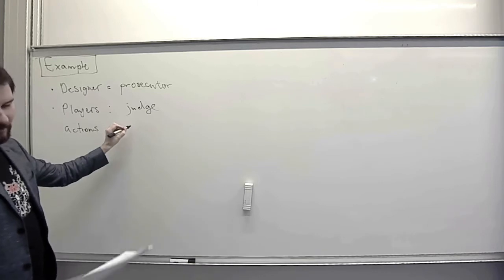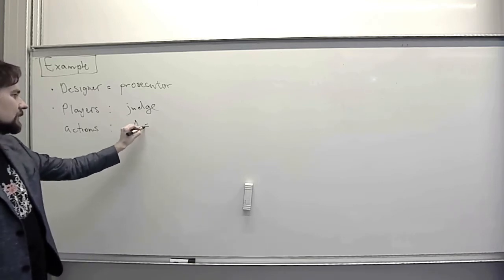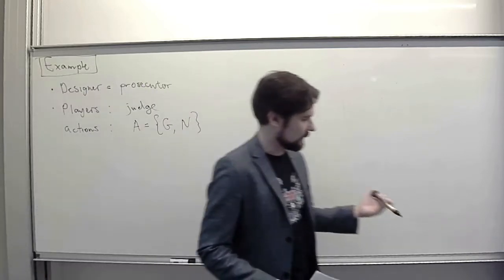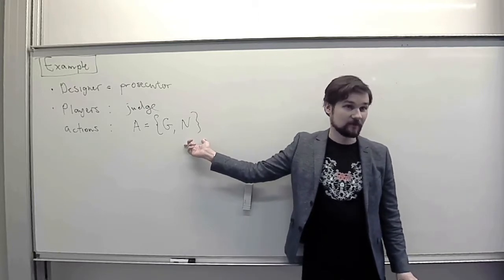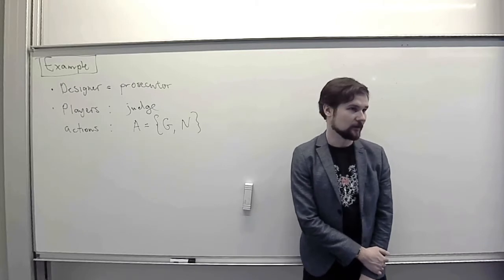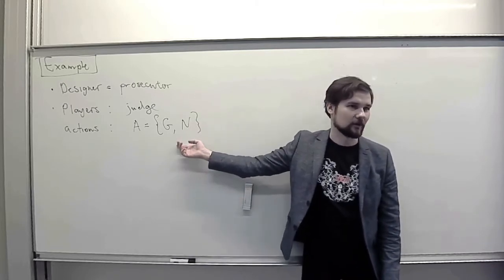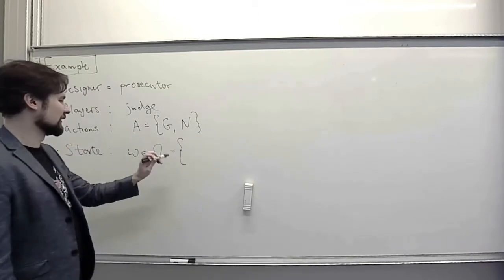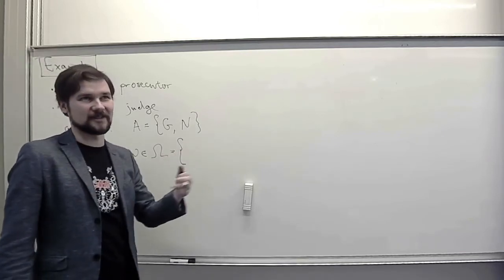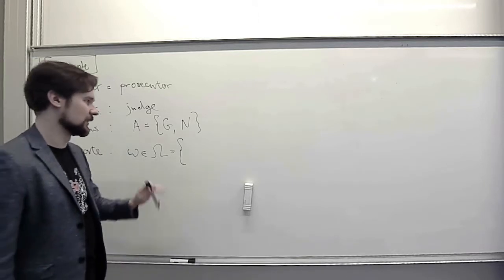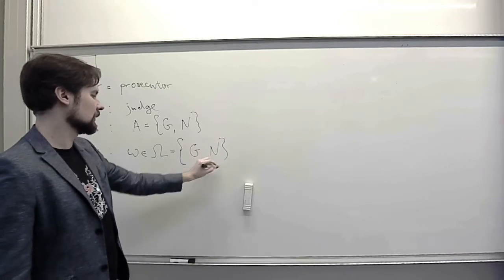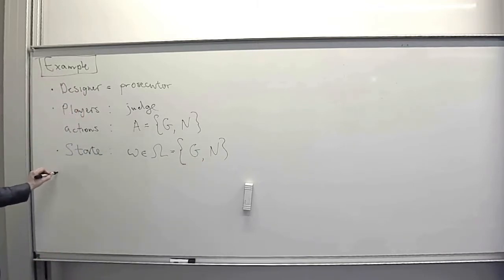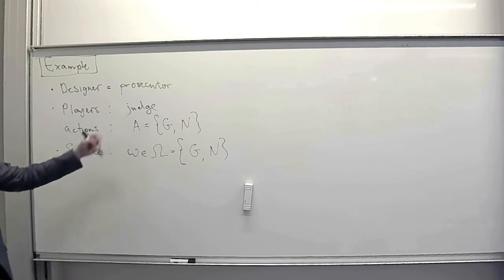The actions of our player are already on the slide: convict or not. I'll label these as claiming the suspect is guilty or not guilty. The judge's decision depends on the information we give them. The reason we are not including the suspect is that the suspect has no action in our game. The state of the world is the guilt of the suspect — binary: either guilty, state g, or not, state n.